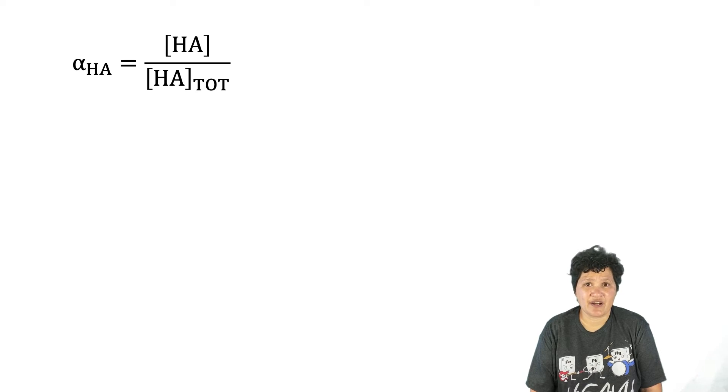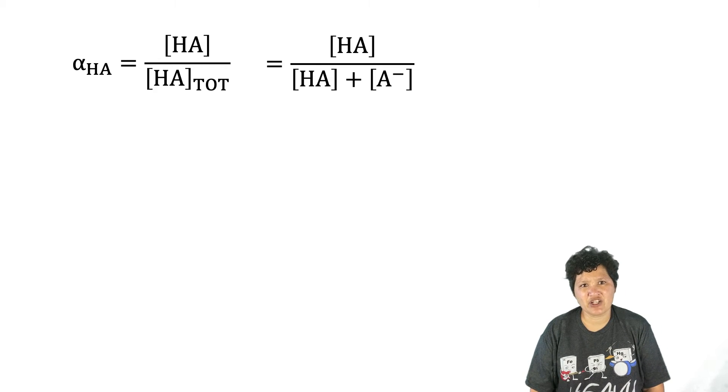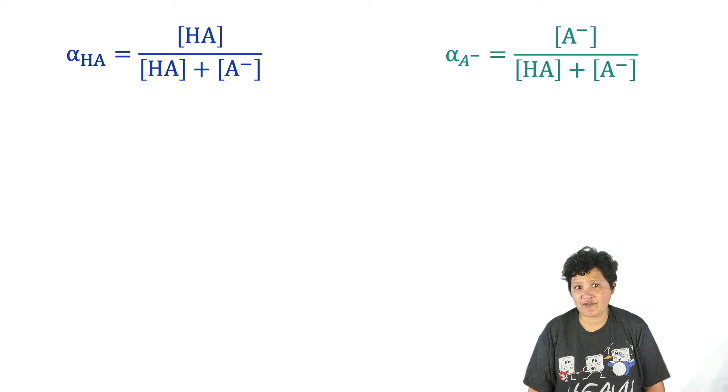For a monoprotic acid, we can calculate two different fractional compositions, one for HA and one for A-. The fractional composition for HA, alpha sub HA, will be the concentration of HA divided by the total concentration of the acid. I'm going to substitute in the expression for total HA that we calculated in the previous slide. And then the fractional composition of A-, alpha sub A-, will be the concentration of A- divided by the total amount of HA. So here's what we have so far.